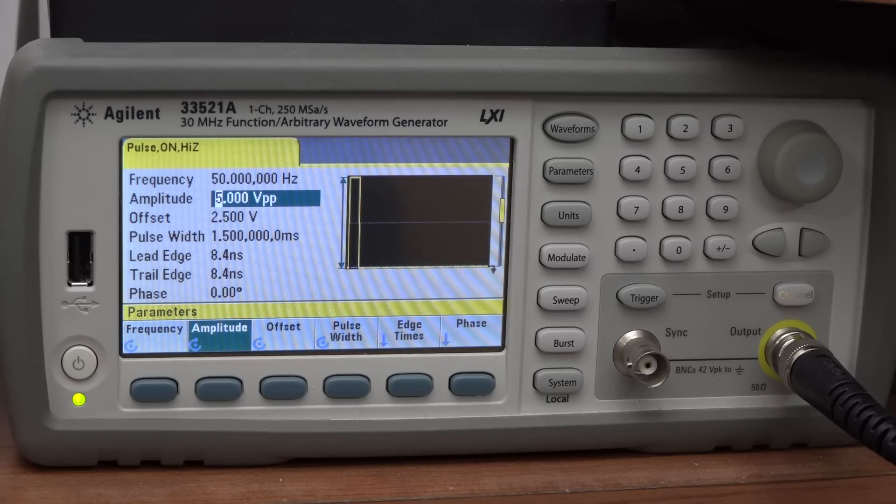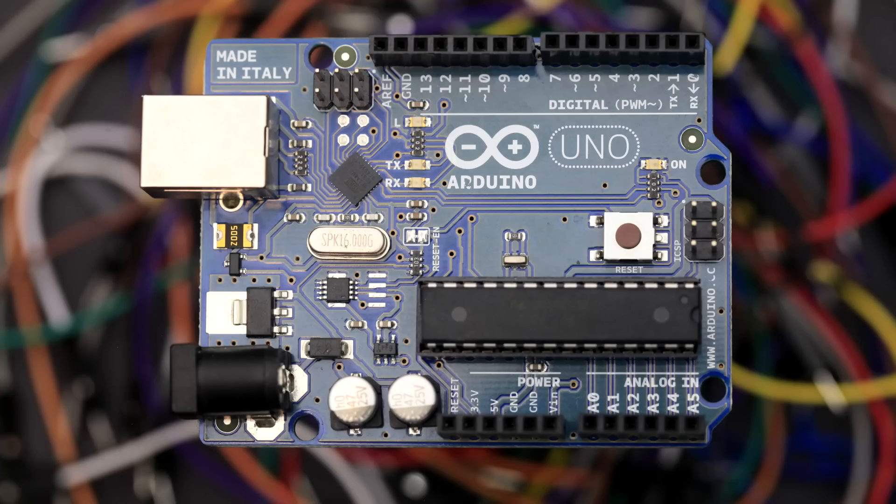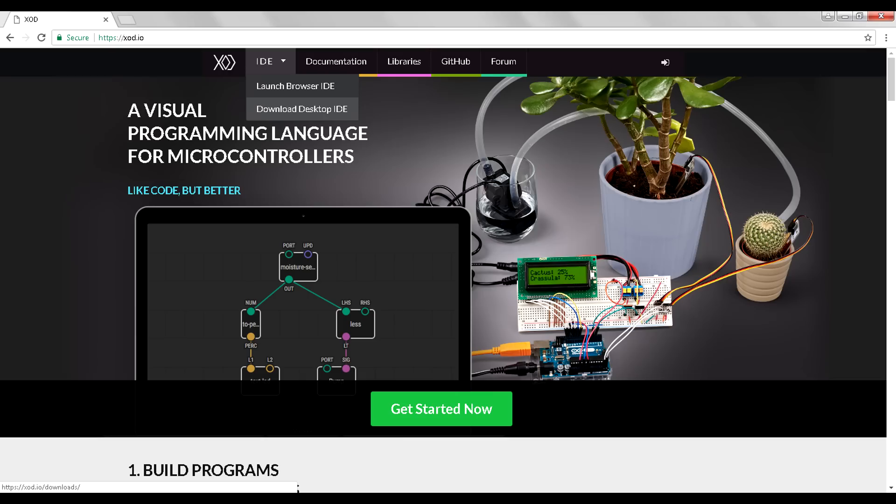I've been using a fancy waveform generator to generate these pulses for demonstration purposes. But you don't need one of these to do this at home. Now it is possible to generate servo pulses with a 555 timer circuit, but I wouldn't recommend it. Really the best way to do it is with a microcontroller like an Arduino, because it'll give you very precise control over the timing. Make sure you've watched my previous tutorial on Arduino if you need an introduction. And then soon I'm going to show you how to use Zode to create the servo signals.